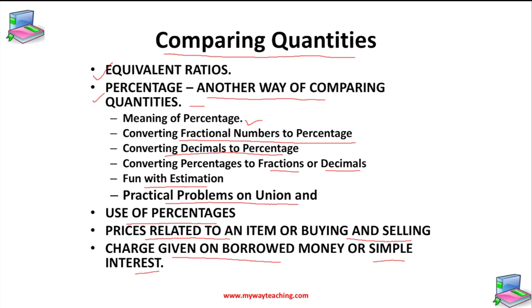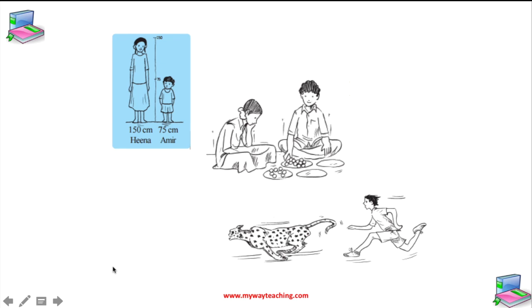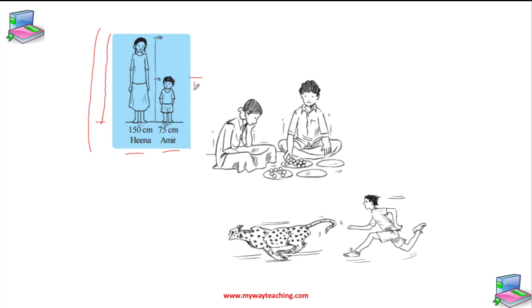Now let us discuss about what is the meaning of comparing quantities. In our daily life, there are many occasions when we compare two quantities. For example, there is Hina and Amir. We can compare their heights. Hina's height is two times taller than Amir's height, or we can say that Amir's height is half of Hina's height.